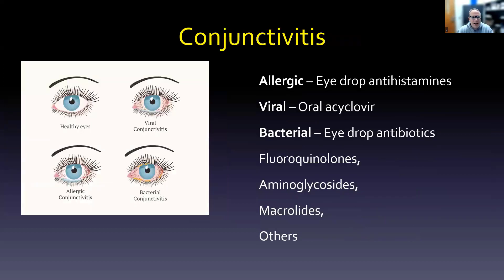Let's move on to the eyes. There are really three big types of conjunctivitis you have to deal with. There's the allergic type, where we put in an antihistamine eye drop. Something viral — we might have to take an oral medication like oral acyclovir. Or if it's bacterial, we have lots and lots of eye drop antibiotics: fluoroquinolones like we talked about with the ear, aminoglycosides like gentamicin and tobramycin, macrolides like erythromycin, and others like neomycin.